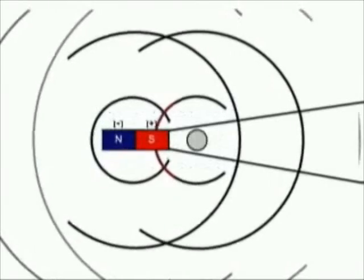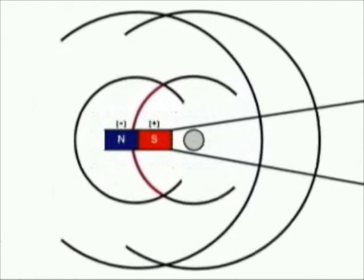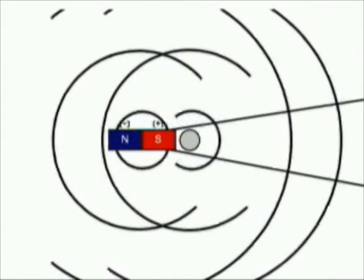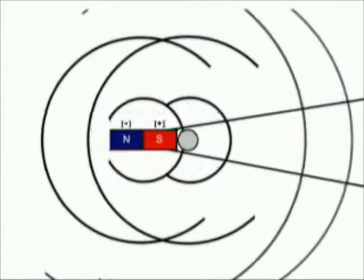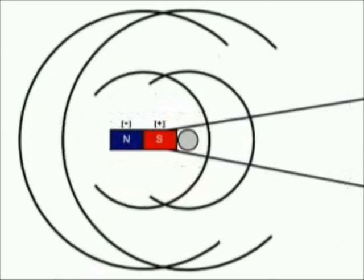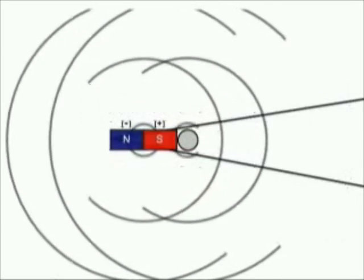This process is repeated each time the pulse gravity waves pass through the ball or the magnet, until the ball touches the magnet. When you take the steel ball away from the magnet, the ball atoms stop oscillating and no longer produce pulse gravity waves. The ball is no longer magnetized.